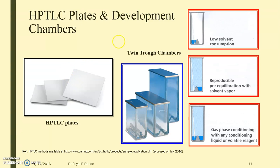Some may have a very large pore size, some may have a very small one. The major adsorbent we use is silica, although we have different other adsorbents like alumina and Cellulose. Now coming to the twin trough chamber — this is how the twin trough chambers look. They are called twin trough because there is a trough in between made up of glass, giving two different faces, and above there is a lid to make sure that the solvent does not evaporate.